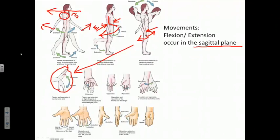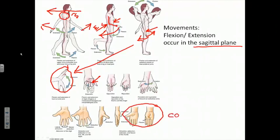What about the thumb and fingers? When we flex our fingers — when you make a fist — you are flexing your fingers in the sagittal plane, rolling them up to flex at the joints between the metacarpals and the phalanges. But interestingly, when we flex and extend our thumb, we're not doing so in the sagittal plane — we're flexing and extending the thumb in the coronal plane. So thumb actions of flexion and extension do not occur in the same plane as flexion and extension of the digits.